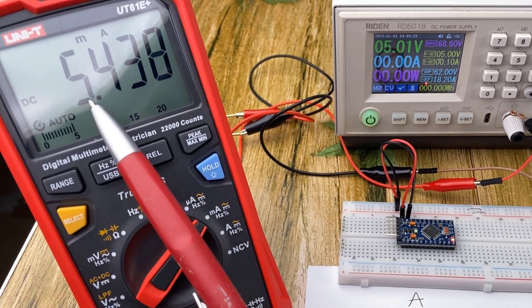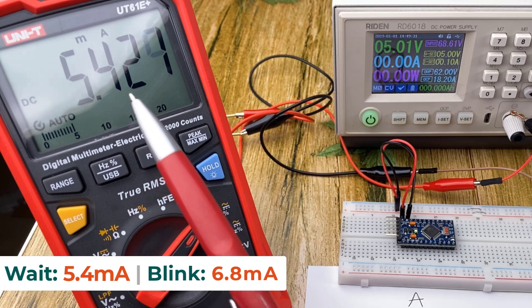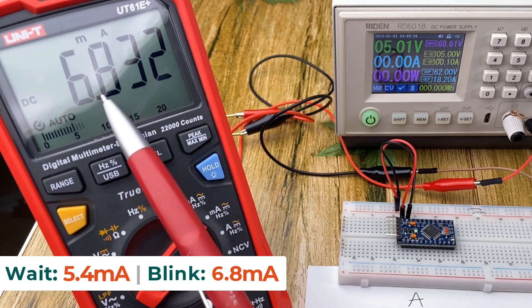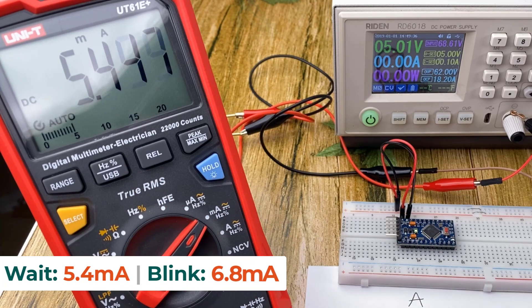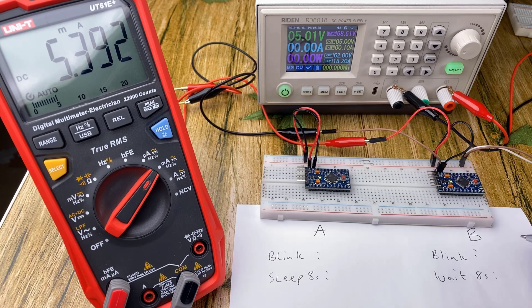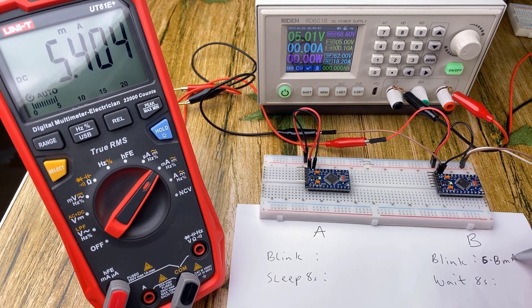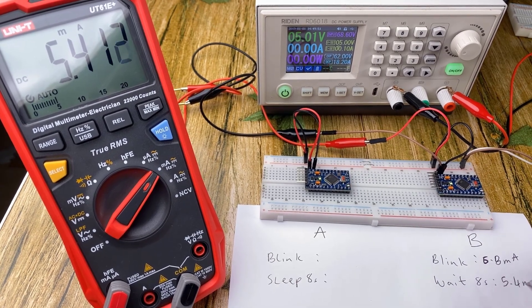Over here on the multimeter we can see the board consumes 5.4 milliamps while waiting and about 6.8 when the LED is on. So we'll go ahead and write that down. 6.8 milliamps and 5.4 milliamps.